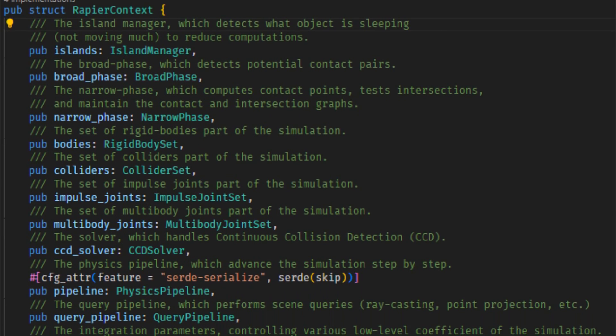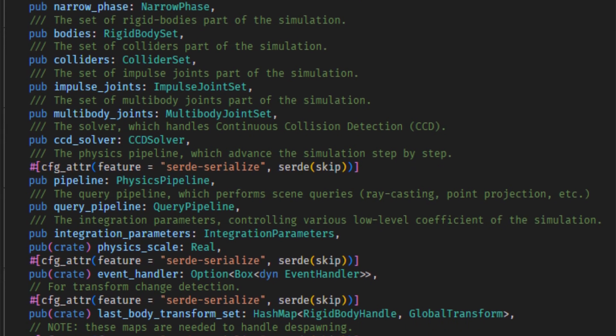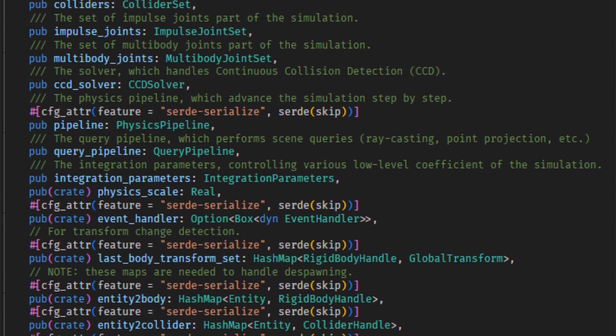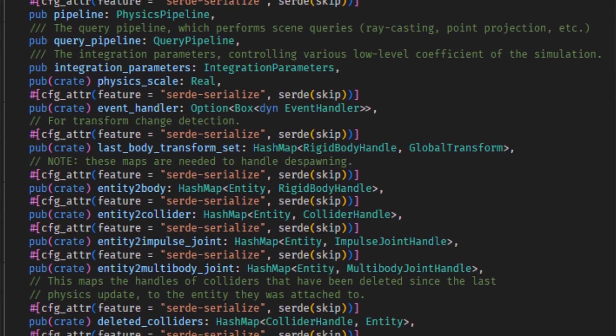Next is the Rapier context. This is the actual physics world itself and allows you to interface with the world in a more robust way, such as casting rays or shapes or getting collision information that is more detailed than is provided by other methods.